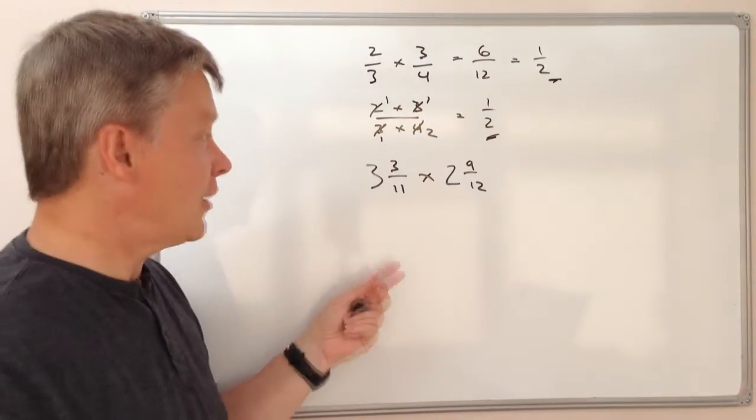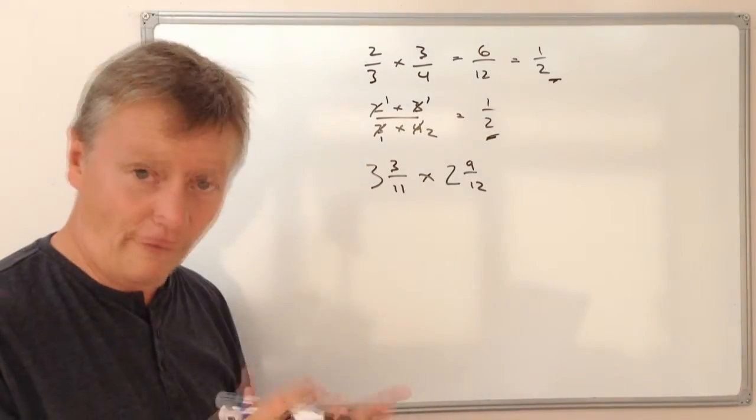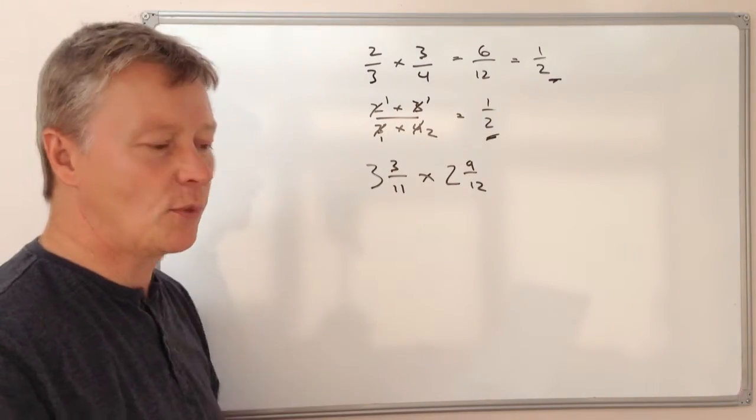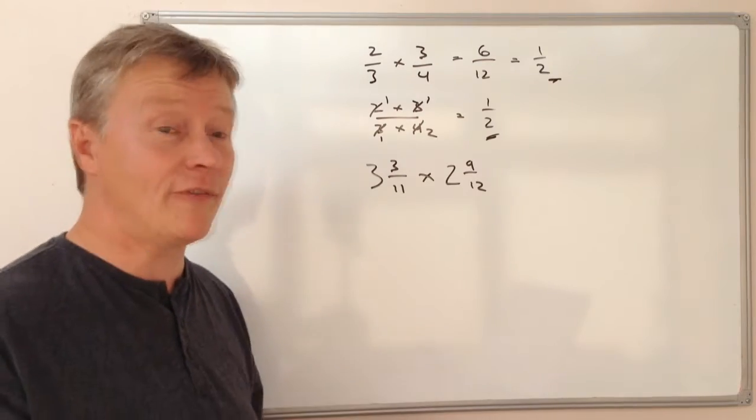Well, the first thing about multiplying fractions is you need to make sure that you've got fractions. So you need to make sure you've got improper fractions. In this particular case, some people call them top-heavy fractions.